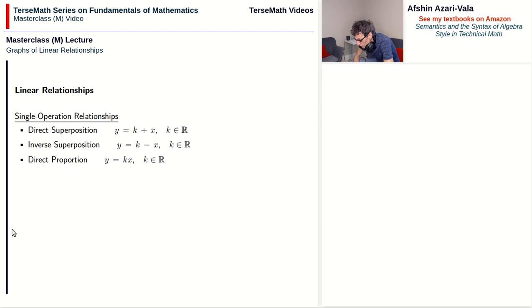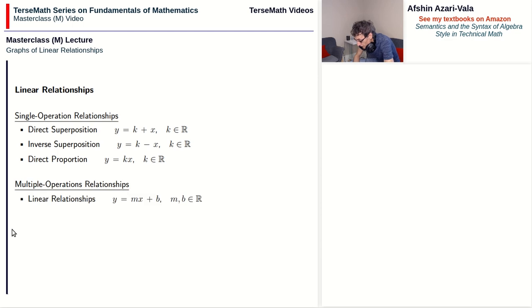In addition to the three basic relationships of direct superposition, inverse superposition, and direct proportion, any combination of these three will also appear as a straight line. Such combinations have equations of the form y equals mx plus b, with m and b being constants. I would like to mention that y equals mx plus b is not the most general form of the equation of a straight line — it does not capture vertical lines.